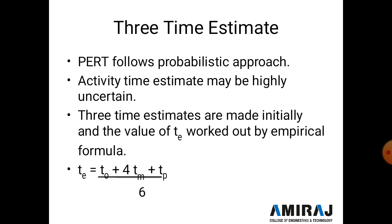PERT follows the probabilistic approach, where the probable time is not a final fixed value — it can be higher or lower. Activity time estimates may be highly uncertain, so three time estimates are made initially, and the value of te is worked out using an empirical formula. This formula is important for both CPM and PERT network diagrams.